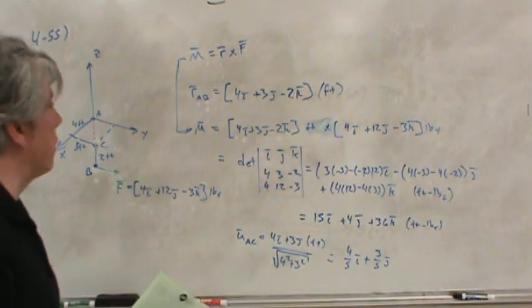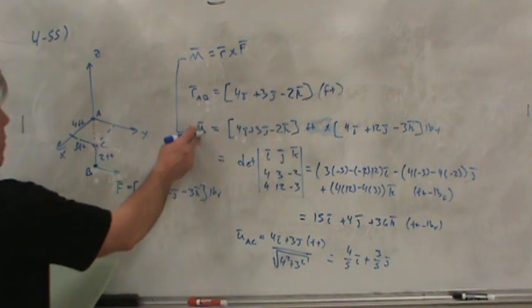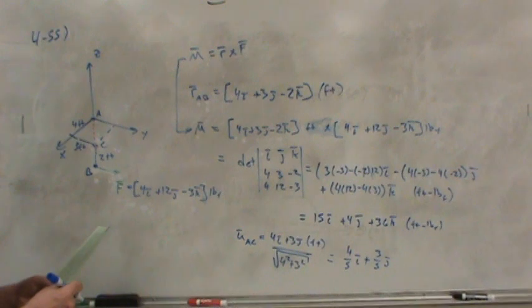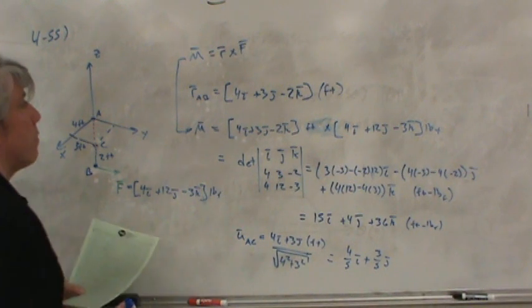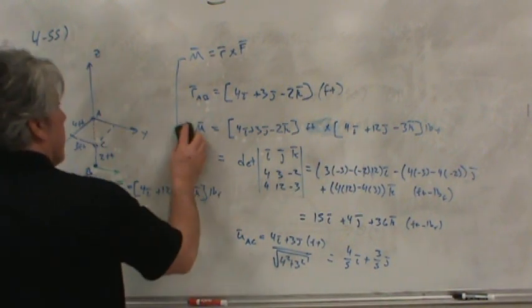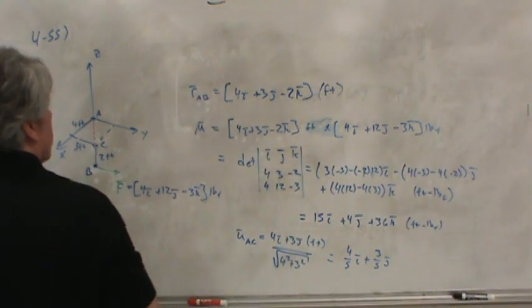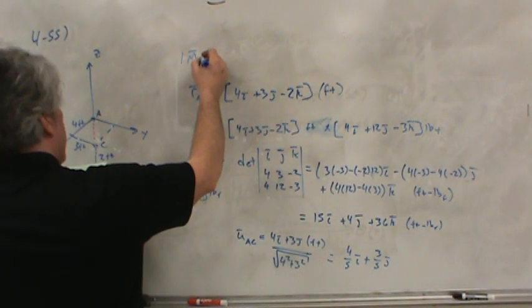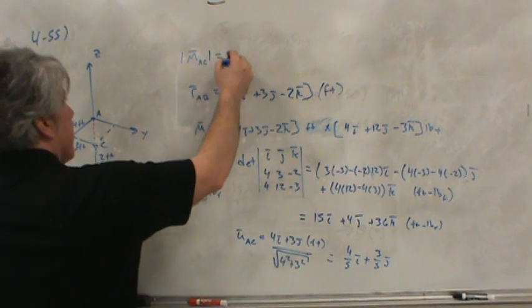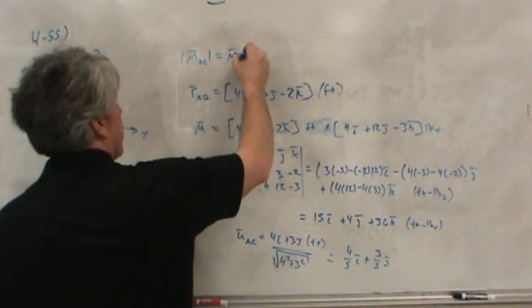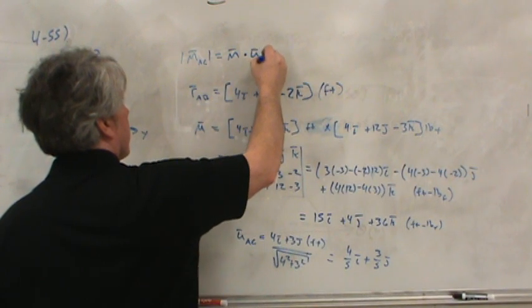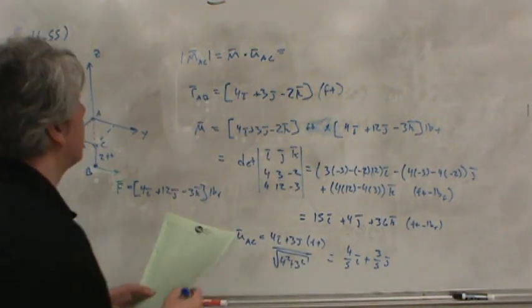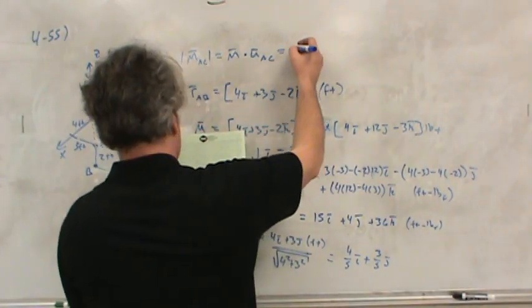And now all you need to do to calculate the magnitude of the moment along line AC is to simply take the dot product of the moment with the unit vector. So, if I want the magnitude of the moment about line AC, I need to take the moment that I computed and take the dot product with the unit vector along the line where I want the moment.